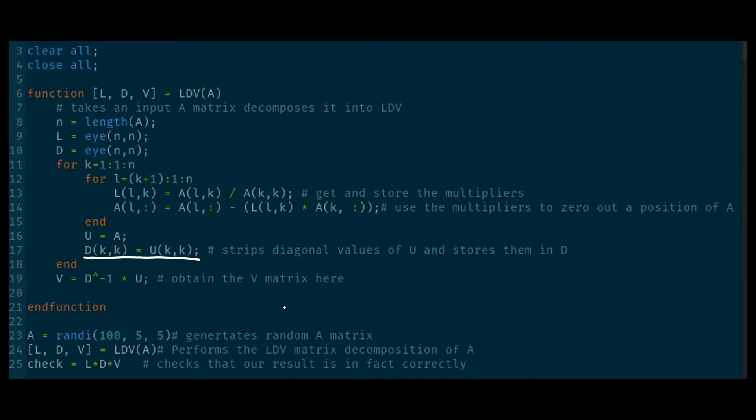Then here in line 17, we're stripping the values within the for loop here, just like with the Python code. And then you can see a little bit more clearly here, straightforwardly here, that we're computing V by just doing D inverse by U. Then down here, we are generating a random 5 by 5 matrix, performing the LDV matrix decomposition, and then checking that all out. Let's take a look at the terminal.